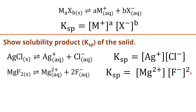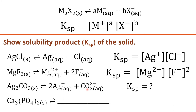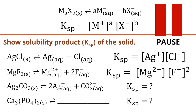Some students in previous years made a mistake here — the concentration of F⁻ ion only is raised to the power of 2; number 2 here is the power of the concentration, not a coefficient inside the brackets. For silver carbonate (Ag₂CO₃), it separates into 2 moles of Ag⁺ and 1 mole of CO₃²⁻. And for calcium phosphate Ca₃(PO₄)₂, what would be the balanced equation and what would be the Ksp? Please pause and come back when you are done.